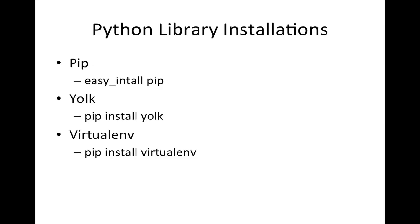Now, the first thing we're going to do is we're going to install a couple of libraries. We're going to install pip, which is an installation library; yolk, which lets me know what I have installed; and virtualenv, which lets me separate my Python environments into virtual environments. So let's take a look at how we do that.